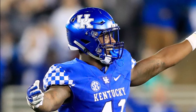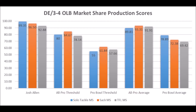Starting out with Josh Allen's production data — fantastic. 99.35 in terms of solo tackle data, 96.50 in terms of sack data, and 92.88 in terms of tackle for loss data. He pretty much hits all the all-pro thresholds and pro bowl thresholds, and does very well when you look at the averages of an all-pro player and the averages of a pro bowl player. Josh Allen's production data is just fantastic.